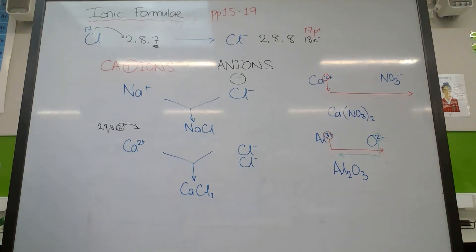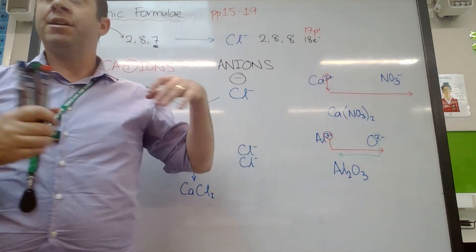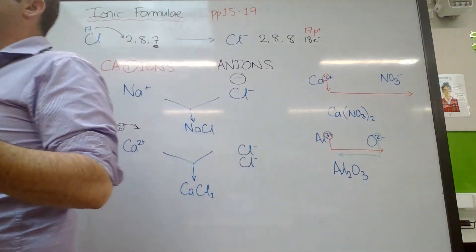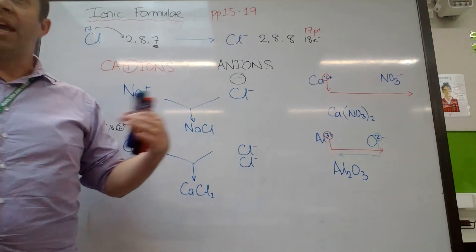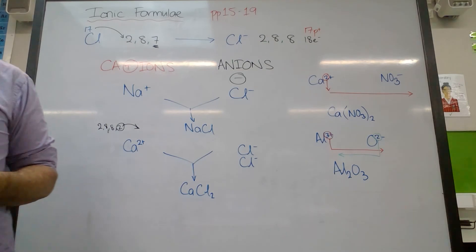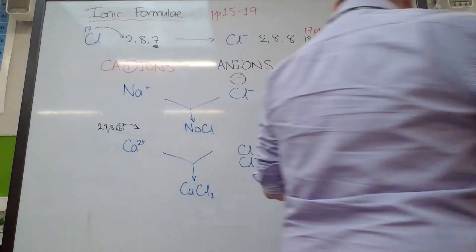Now, my check is, do those charges cancel out? So there's the same number of pluses as there are minuses. Well, two three pluses would be six plus, and three two minuses would be six minus. So I've got six positive charges and six negative charges. So they do indeed cancel out. So this would be correct.